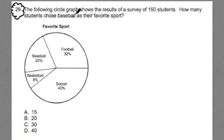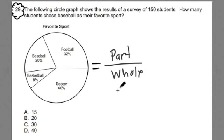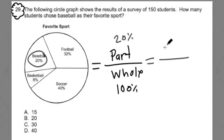So let's look at this problem here. The following circle graph shows the results of a survey of 150 students. How many students chose baseball as their favorite sport? This is a pie chart, a pie graph. Whenever you think of a pie chart, I want you to think about part-to-whole relationships. The whole is 100% of this pie chart, so 100% would be all the students. And in terms of the students that like baseball, we're just looking at 20% of them. So we're trying to figure out what's 20% of that 100%.